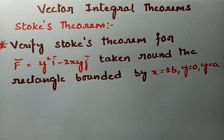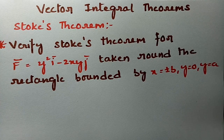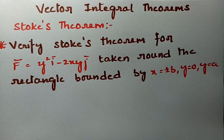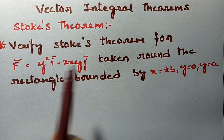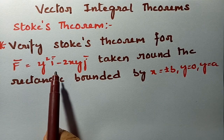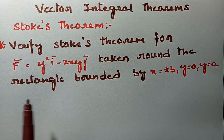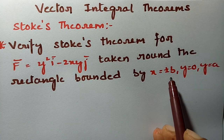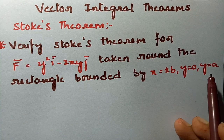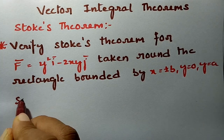You will significantly improve your confidence in solving if you watch this video till the end. I have come up with a problem on Stokes theorem from vector integral theorems. We have to verify Stokes theorem for f̄ = y²ī - 2xy j̄, taken around the rectangle bounded by x = ±b, y = 0, y = a. Here is the solution.